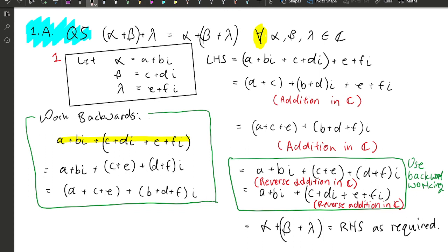We apply addition in the complex numbers and then apply it again to get this. Then we notice that this is actually the same as this. So if we reverse this expression over here back this way, we'll get the result we want.